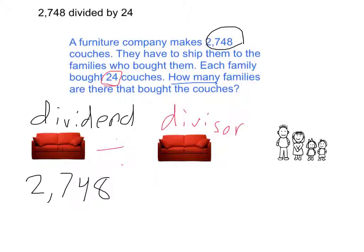It's 24 because it says each family bought 24 couches and a furniture company makes 2,748. So we're dividing this number into this number, making groups of 24 couches out of 2,748. Our groups of couches are over here, which is our divisor, the number that we're dividing.